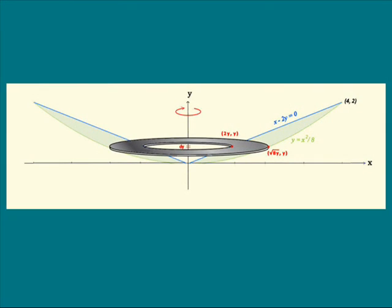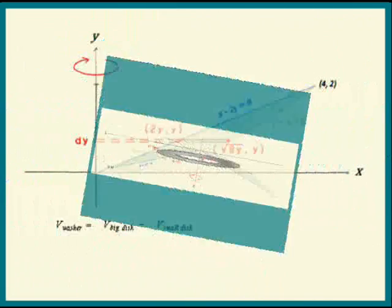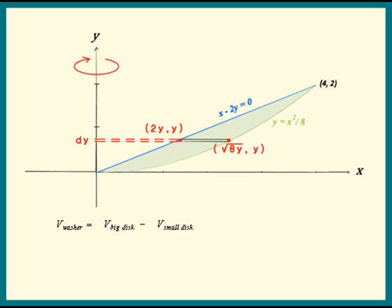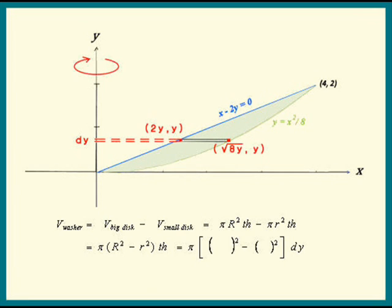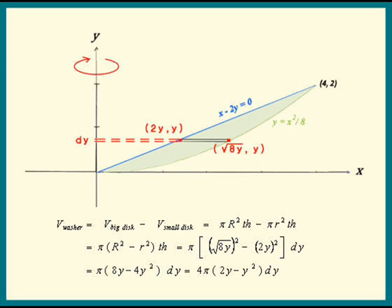Here's a picture of the washer. You can see that its volume is the volume of the big disk minus the volume of the small disk. The volume of the big disk and the small disk are both pi times radius squared times the thickness. The pi factor is out front. The big radius is the big x-coordinate, so we get square root of 8y. The small radius is the small x-coordinate, that's 2y. Now simplify and we see the volume of our washer.